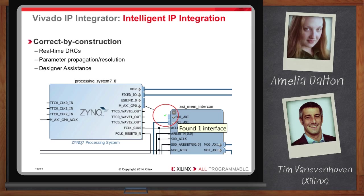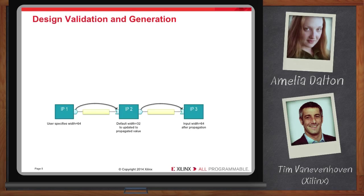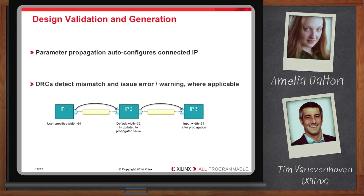What happens if the interfaces are compatible but the IP have parameters that don't match — won't that cause an error? It doesn't have to, because this is where parameter propagation helps you. The IP in IP Integrator is aware of the blocks around them, and the blocks can automatically configure themselves using that information. In this example, three IP blocks — the middle block is set to the default port width of 32 bits, but if you configure the first block to 64 bits, Vivado automatically passes the value and sets the width correctly. In a design with multiple blocks, if you want to change a parameter you can do it once and let the value propagate automatically.